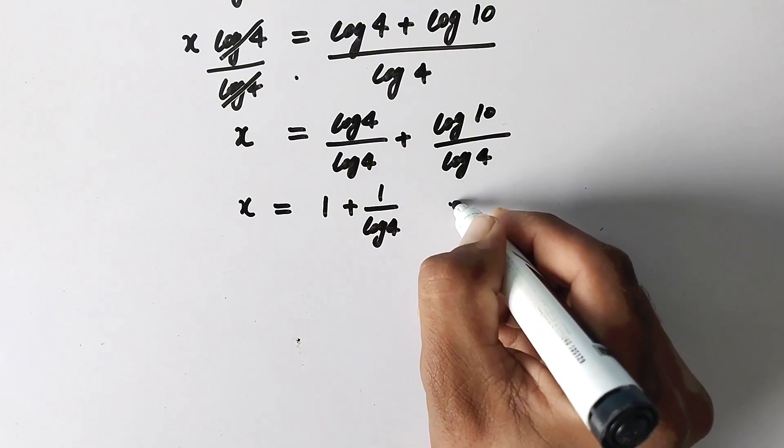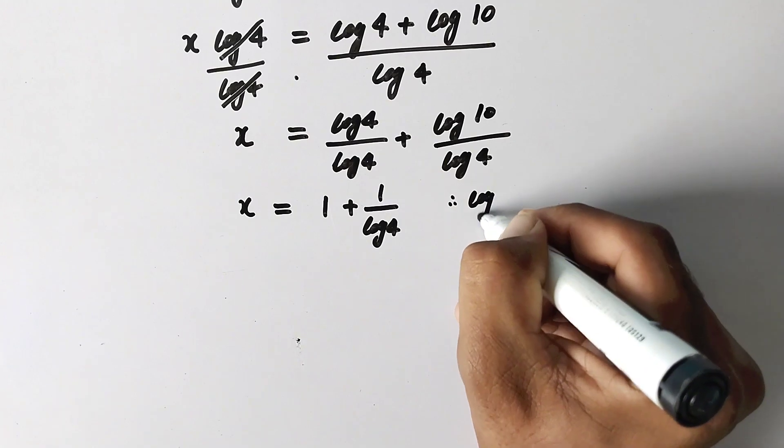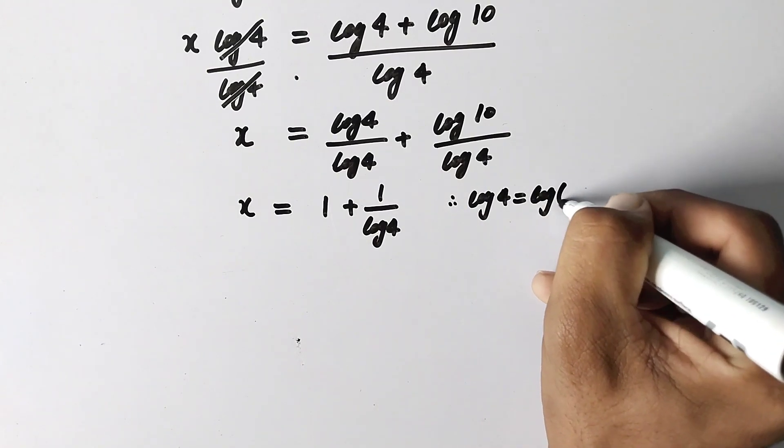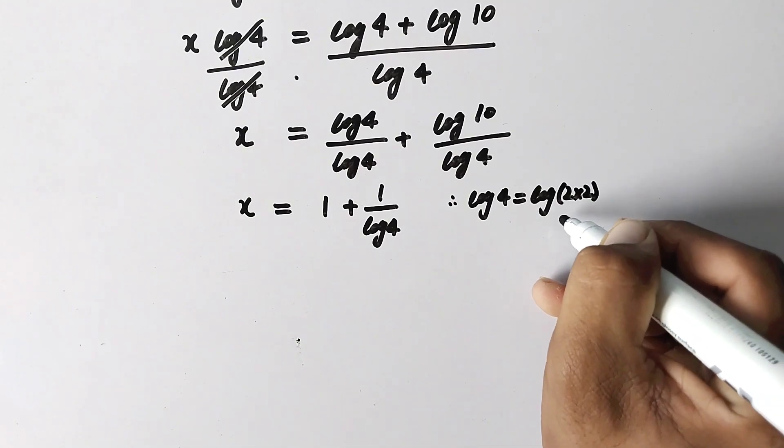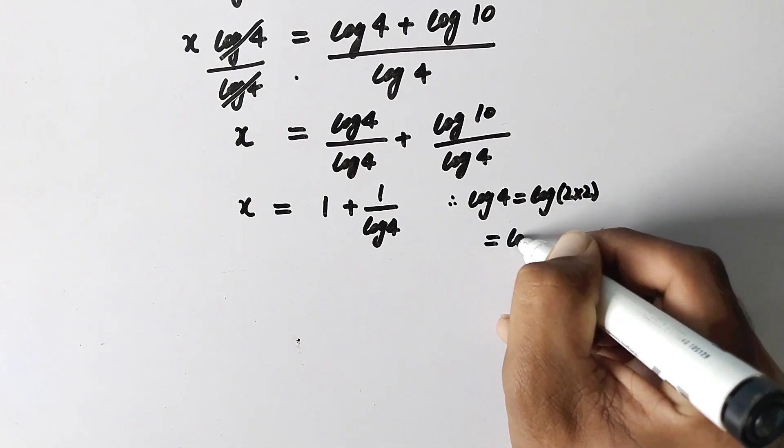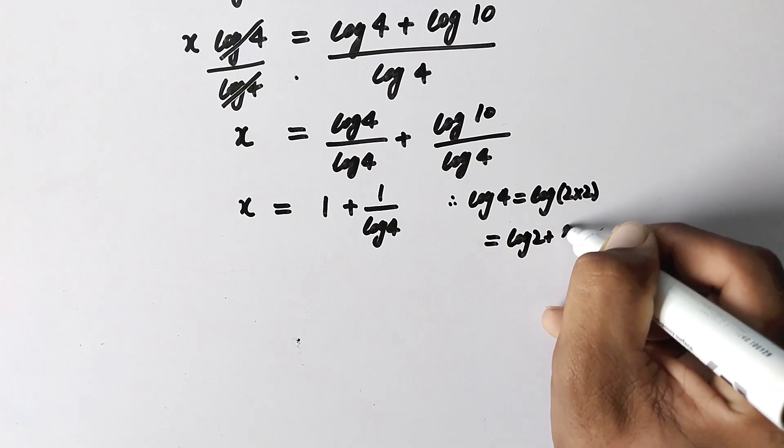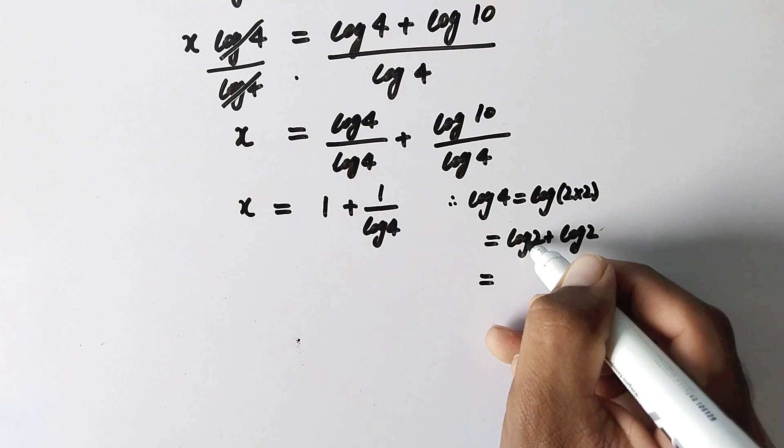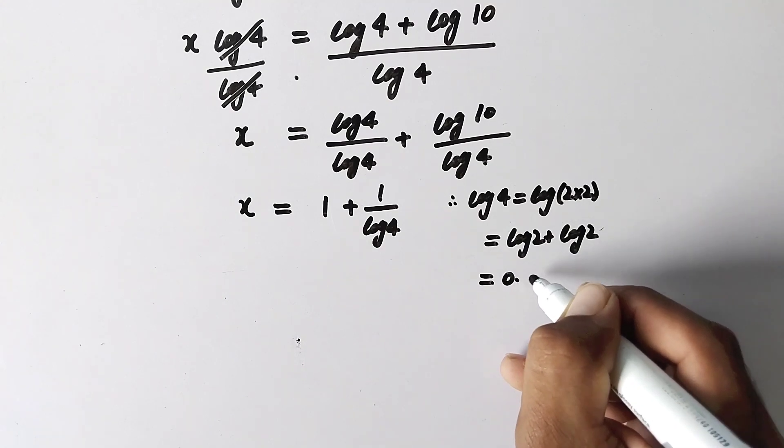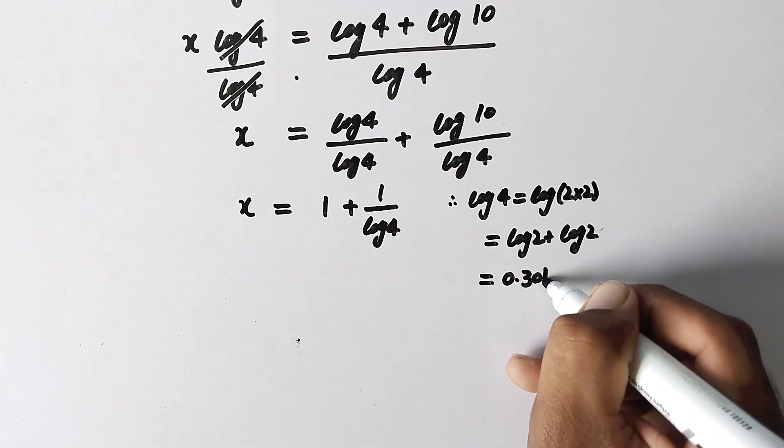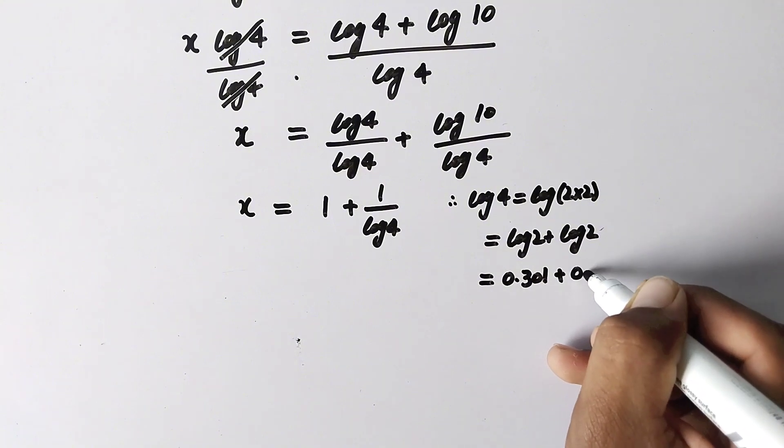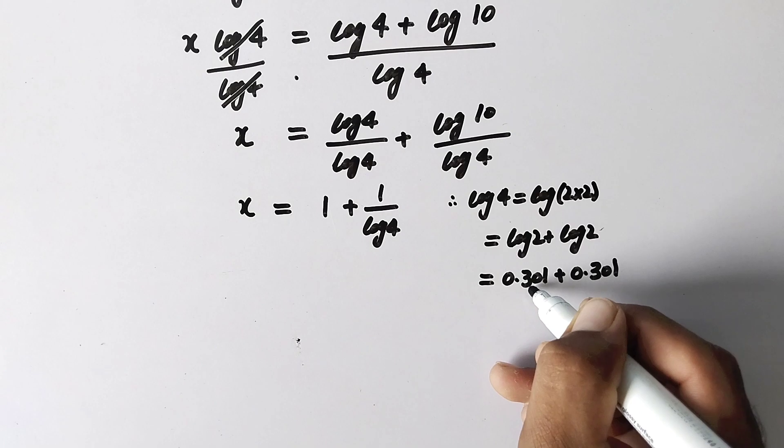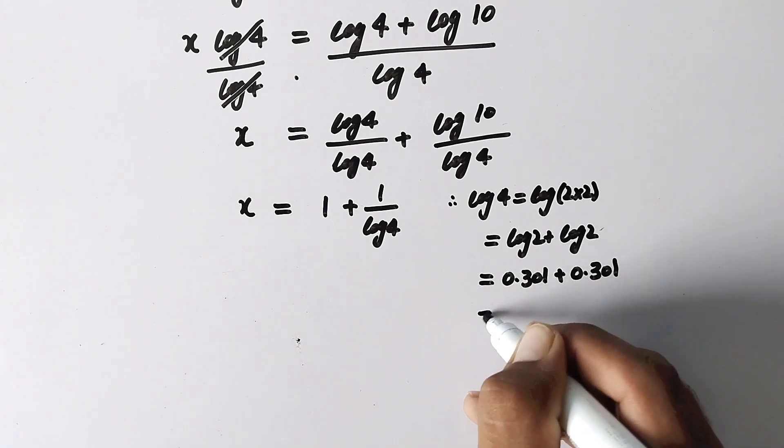Now log 4 is equal to log of 2 multiplied by 2, or log 2 plus log 2. And as we know that log 2 is equal to 0.301 plus 0.301, which equals 0.602.